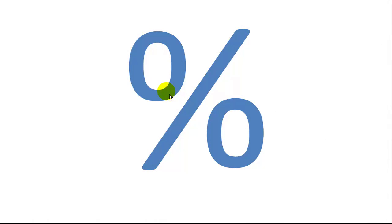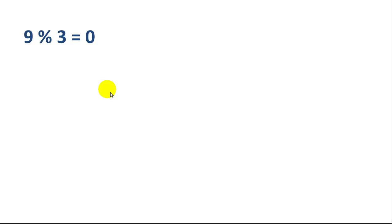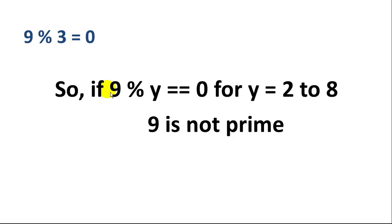So the big question, how do we do this in Java? How do we do the calculation in Java to get the remainder? This is the mod function. If you're not familiar with mod, mod basically computes the remainder of a division. So 9 mod 3 is 0 because the remainder is 0. And if 9 mod y is equal to 0 for any y between 2 and 8, then 9 is not prime.